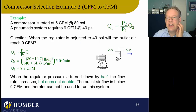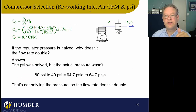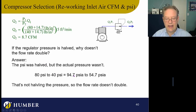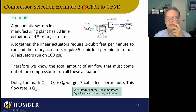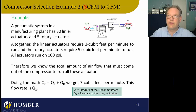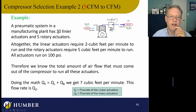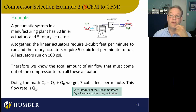Now let's look at SCFM to CFM. We have a compressor rated for SCFM — it just gives you the SCFM without specifying inlet pressure, because it's understood to be atmospheric. A pneumatic system in a manufacturing plant has 30 linear actuators and 5 rotary actuators. The linear actuators require 2 cubic feet per minute and the rotary actuators require 5 CFM. They're all running on 100 PSI.